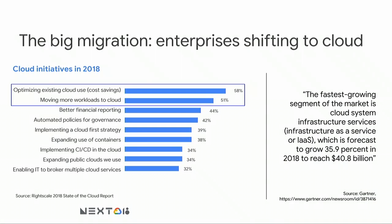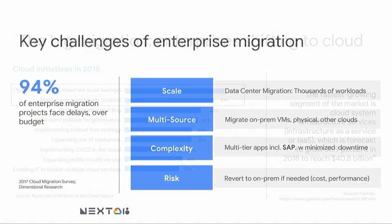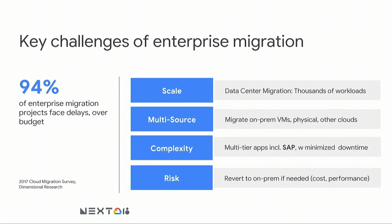It's no surprise that according to Gartner, the fastest growing segment within cloud is by far infrastructure as a service — 36% year-over-year growth and a $40 billion per year business in 2018. The bottom line is enterprises are moving fast at scale. But when you decide to move at scale, this introduces a whole set of new challenges you need to address to avoid a bottleneck in the migration process.